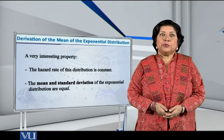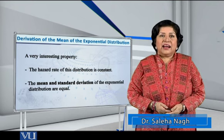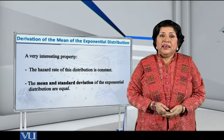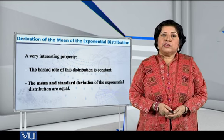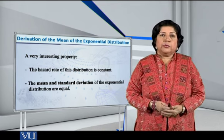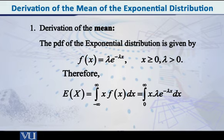As you know, the exponential distribution is a very well-known distribution, and one of its important properties is that the hazard rate of this particular distribution is a constant. Another very interesting property is that the mean and the standard deviation of the exponential distribution are equal. So if we have f(x) = lambda * e^(-lambda*x), where x >= 0 and lambda > 0, then the mean equals 1/lambda and the standard deviation also equals 1/lambda.